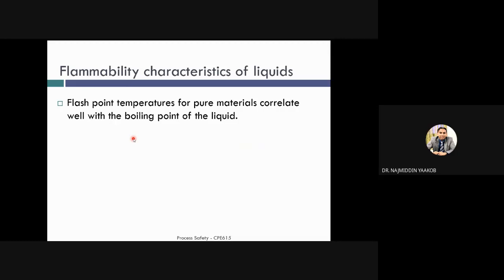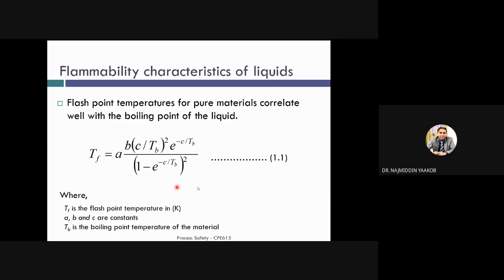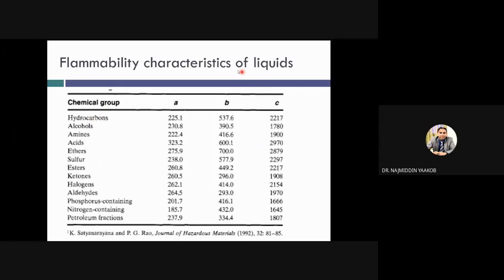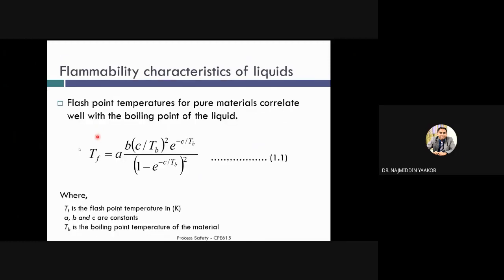Flashpoint temperature for pure compounds correlates well with the boiling point. If I have a flashpoint, it will correlate with the boiling point of the liquid. This is the correlation: you have flashpoint T_fp equals A plus B times T_b plus C times T_b squared, where A, B, and C are constants and T_b is the boiling point of the material. If you have a boiling point of a material, you have the constants, you can calculate the flashpoint. The values for the constants for various chemical groups like hydrocarbons, alcohols, amines, and so on. If you know the boiling point of each of these elements and you know the constants, you can calculate the flashpoint using this equation.